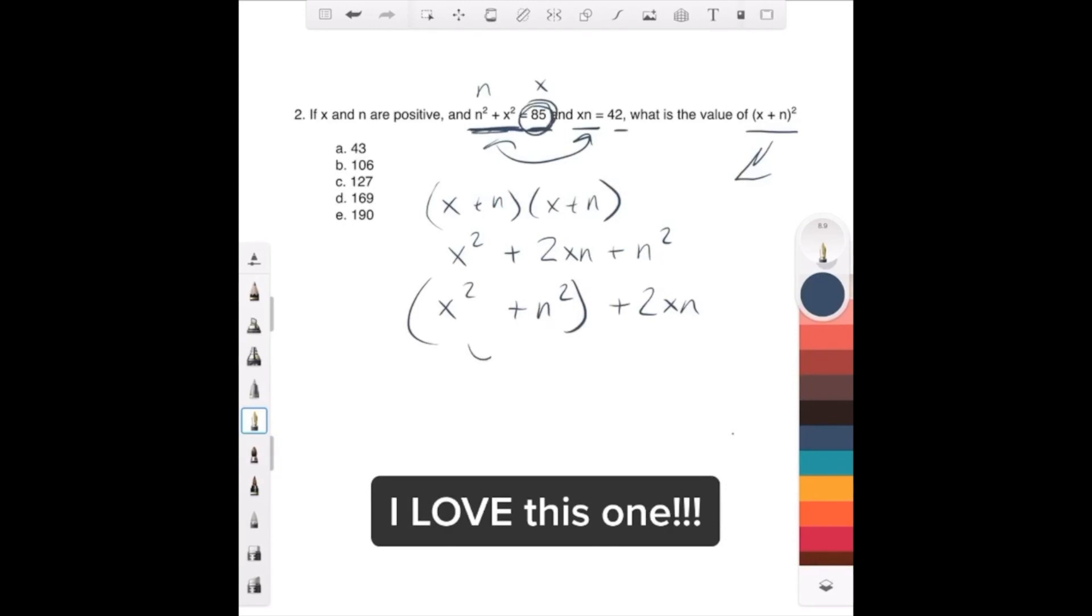So this can become 85. And then what do we know? xn is 42, so 85 plus 2 times xn is what? 42, right? So, 2 times 42 is 84, 85 plus 84 is 169.